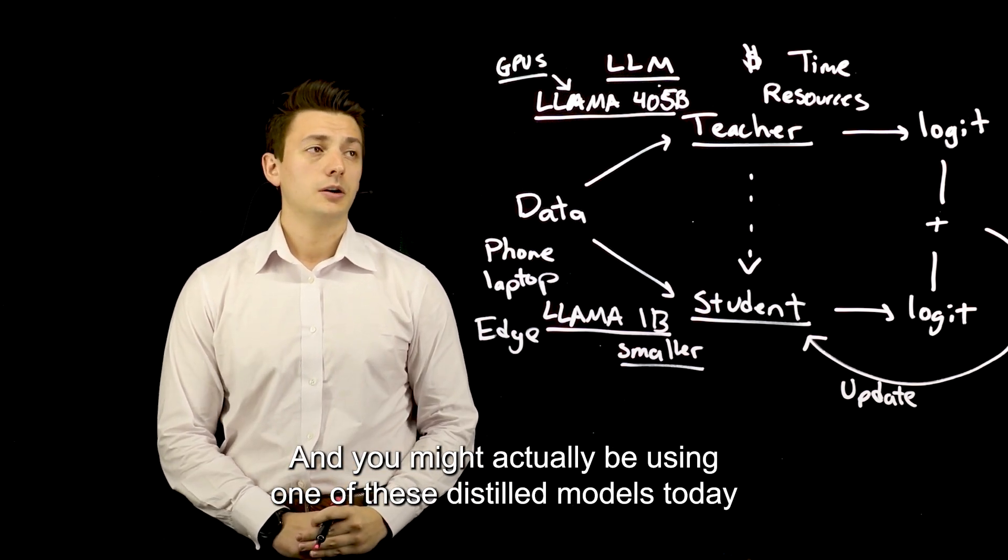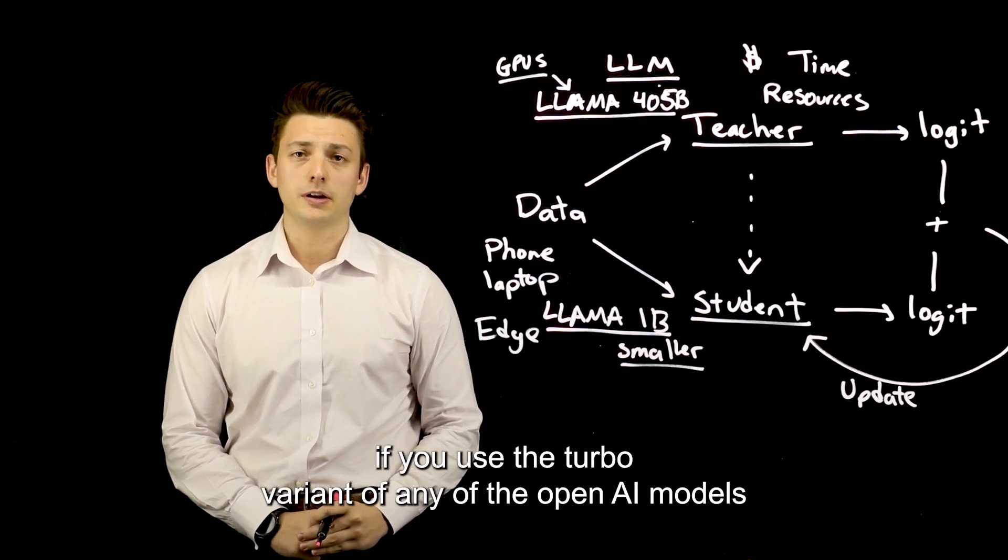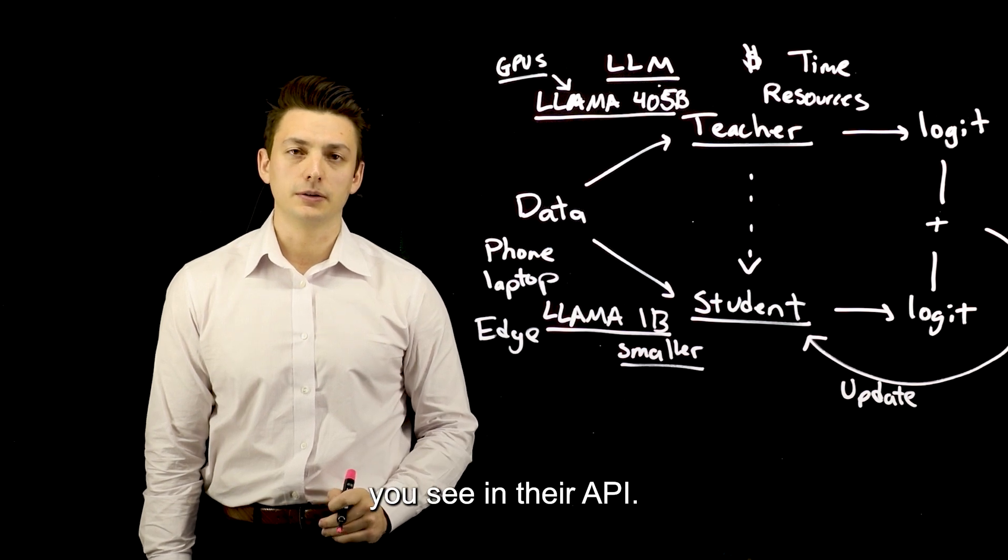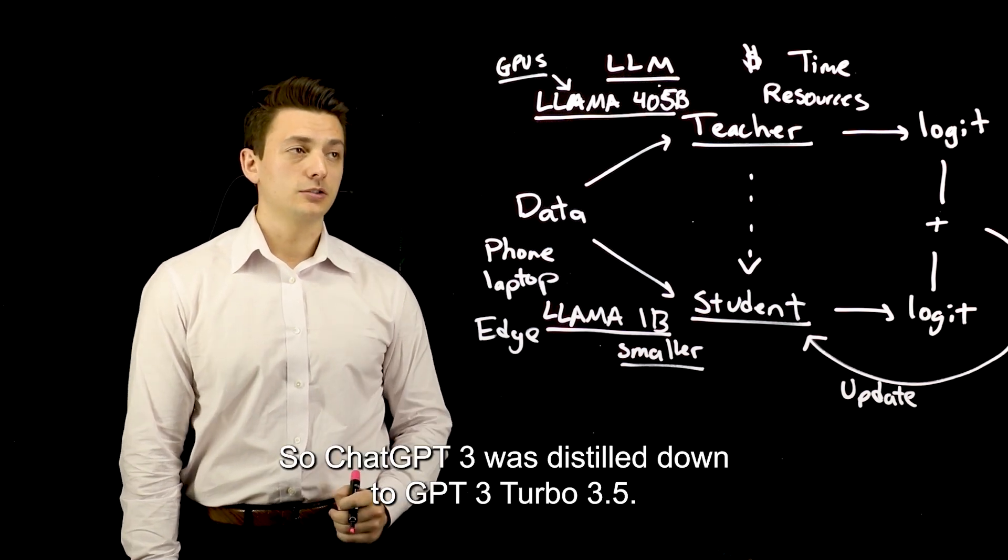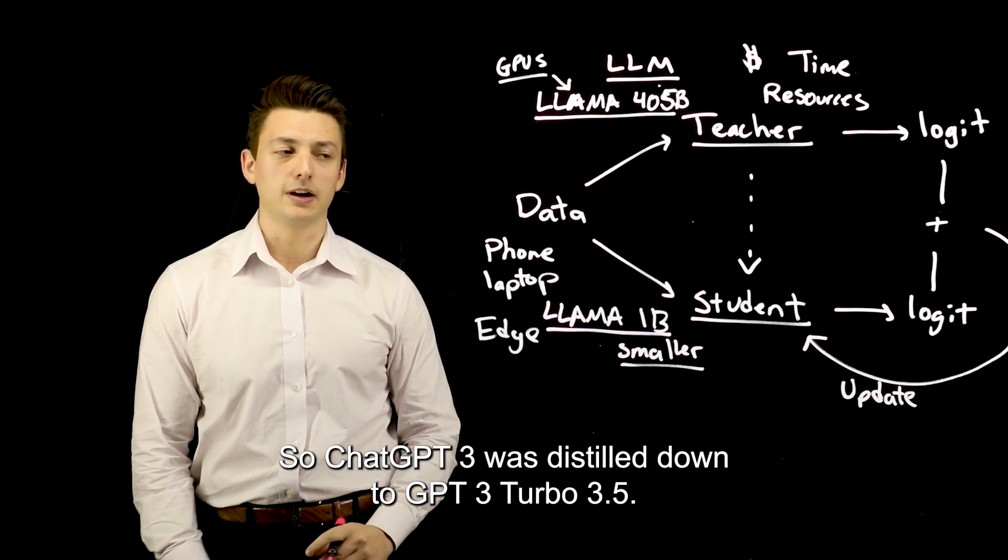And you might actually be using one of these distilled models today if you use the Turbo variant of any of the OpenAI models you see in their API. So ChatGPT-3 was distilled down to ChatGPT-3.5 Turbo.